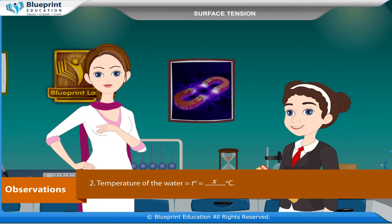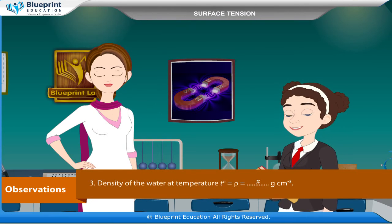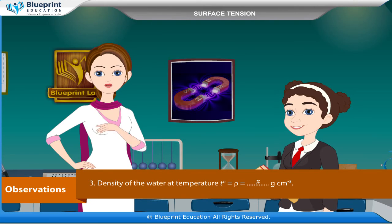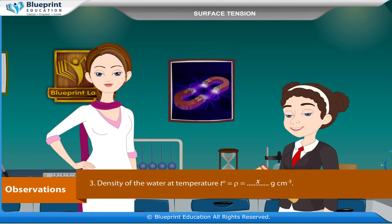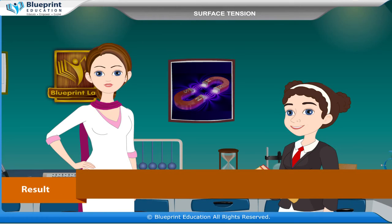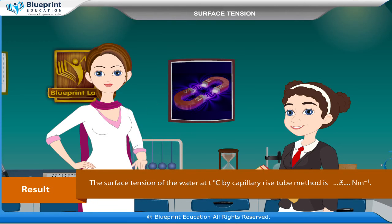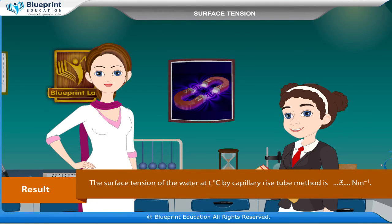Temperature of the water T° = X° Celsius. Density of the water at temperature T° is ρ = X g·cm⁻³. Result: the surface tension of water at T° Celsius by the capillary rise method is X N·m⁻¹.